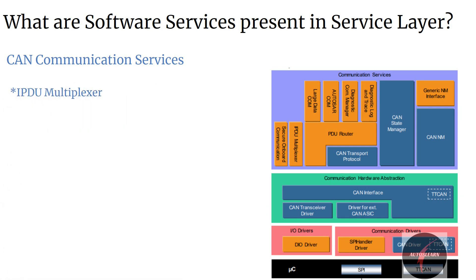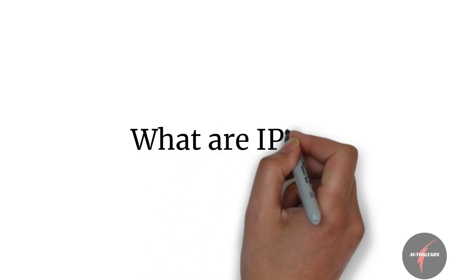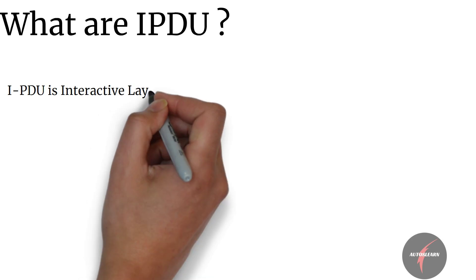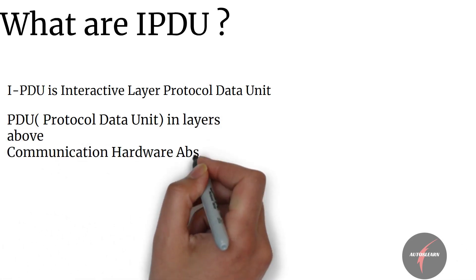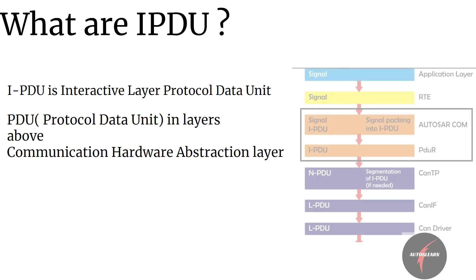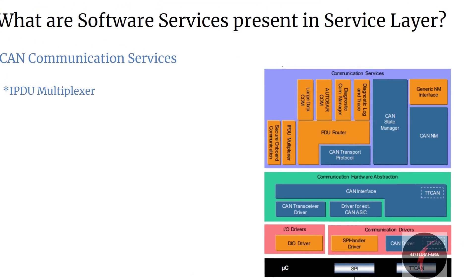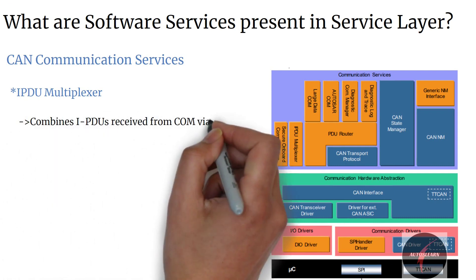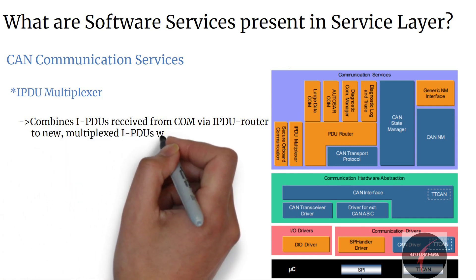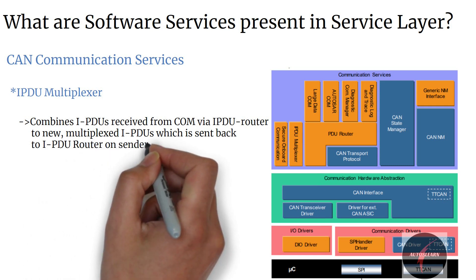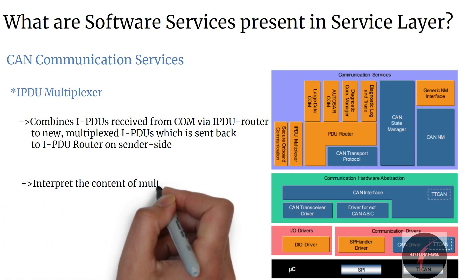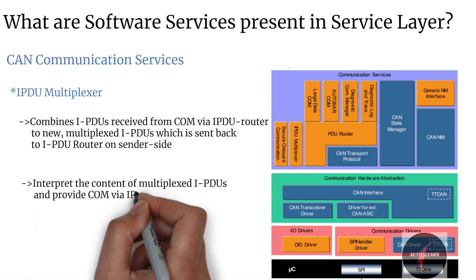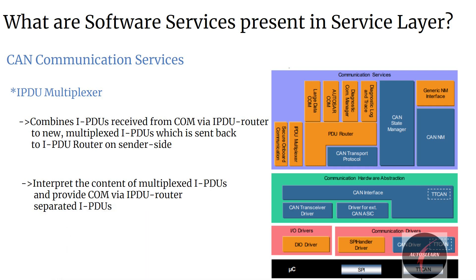Before we understand the iPDU multiplexer, let's understand what an iPDU is. An iPDU — interactive layer Protocol Data Unit — is the name for a PDU when it is in a layer above the communication hardware abstraction layer. The iPDU multiplexer module combines appropriate iPDUs received from COM via the iPDU router into a new multiplexed iPDU to send back to the iPDU router on the sender side, while on the receiver side it interprets the content of the multiplexed iPDU and provides COM with the appropriate separated iPDU by taking into account the value of the selector field.